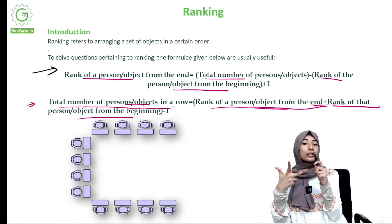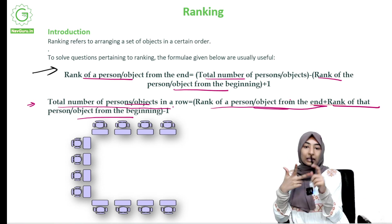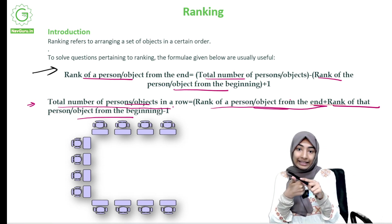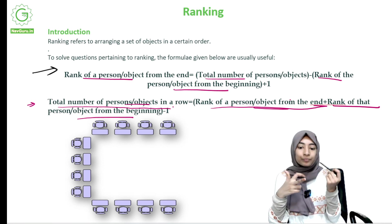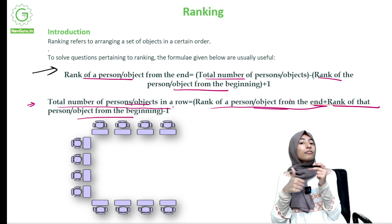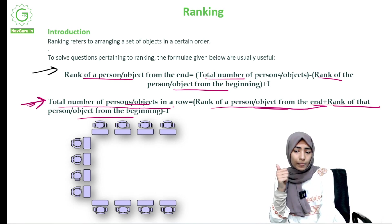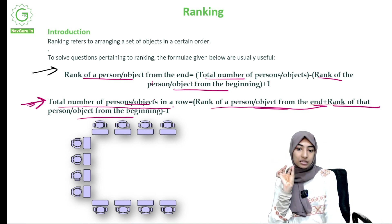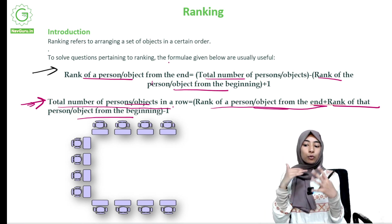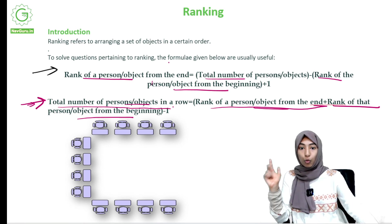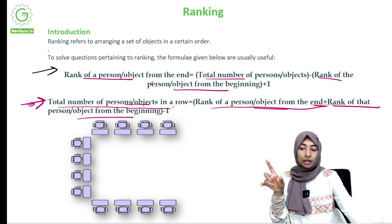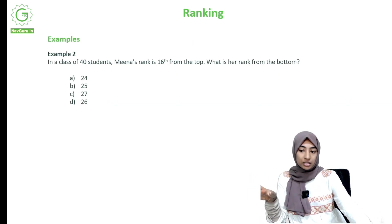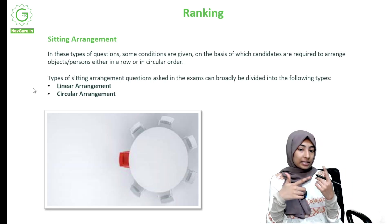If you have rank from the beginning and total number of people, you can find rank from the end. It works the other way too — if you have rank from the end and total number of people, you can find rank from the beginning. If you have rank from the end and rank from the beginning, you can find the total number of people. All of this was explained in the theory class. If you haven't watched the theory class, do go watch it first before the example class.